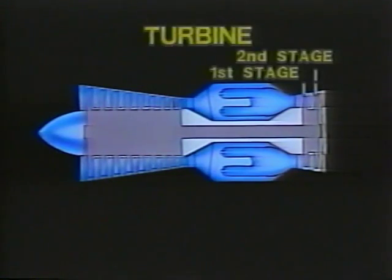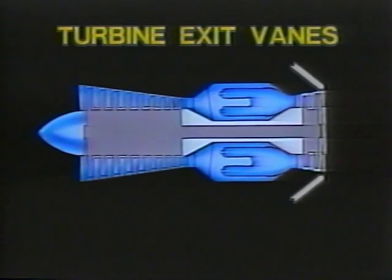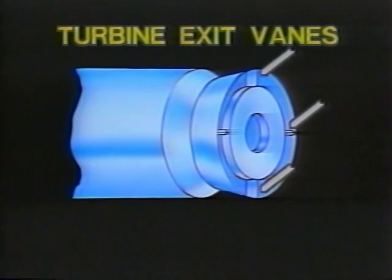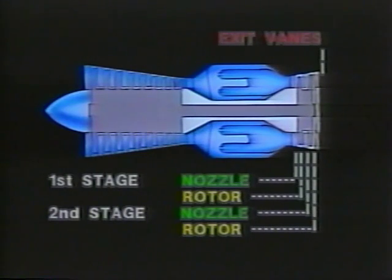Have you wondered why the second stage turbine is larger in diameter than the first stage? No matter how many stages in a turbine, each succeeding stage is larger because it has less hot gas energy to work with. Put simply, the windmill has to be larger because there is less breeze to turn it. The turbine exit vanes straighten the airflow as it passes into the exhaust duct and provide the structure to support the turbine rear hub bearing. Special air seals and minimum blade tip clearances prevent flow leakage around the tips of the blades and vanes. Reviewing the stage numbering: first stage nozzle, first stage rotor, second stage nozzle, second stage rotor, and exit vanes.